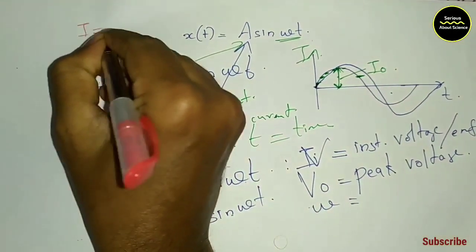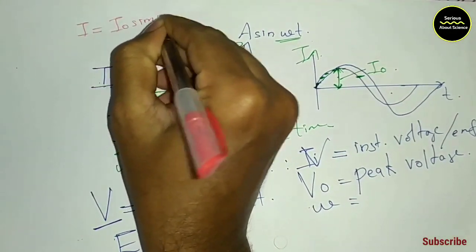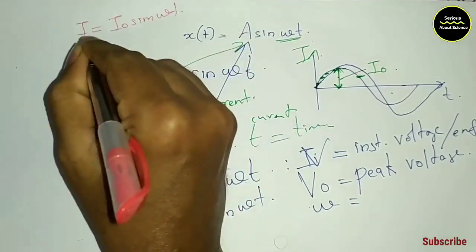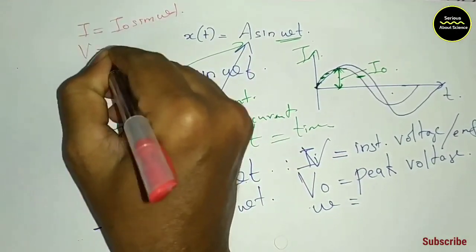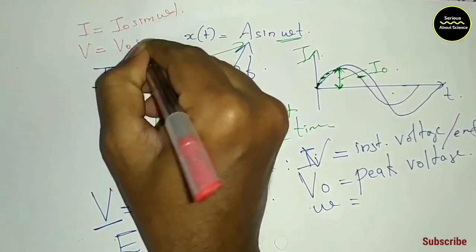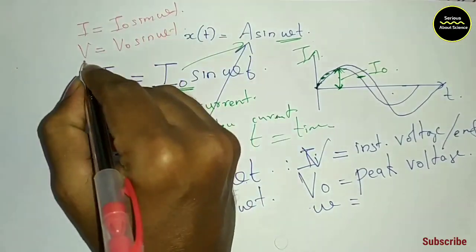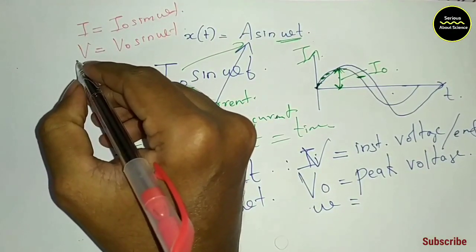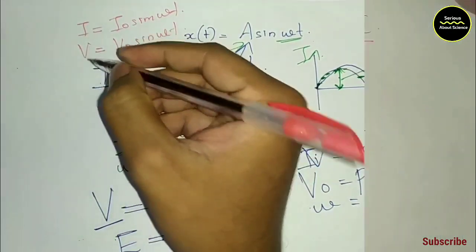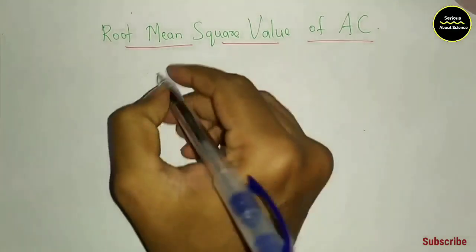The equations are: I equals I₀ sin omega t — instantaneous current. V equals V₀ sin omega t — alternating EMF. The root mean square value of AC.